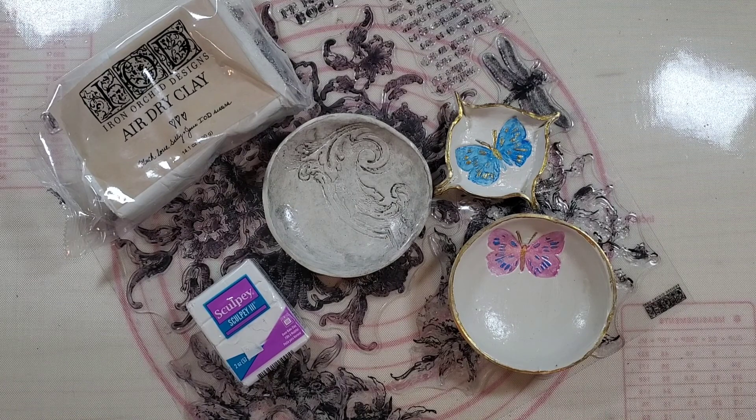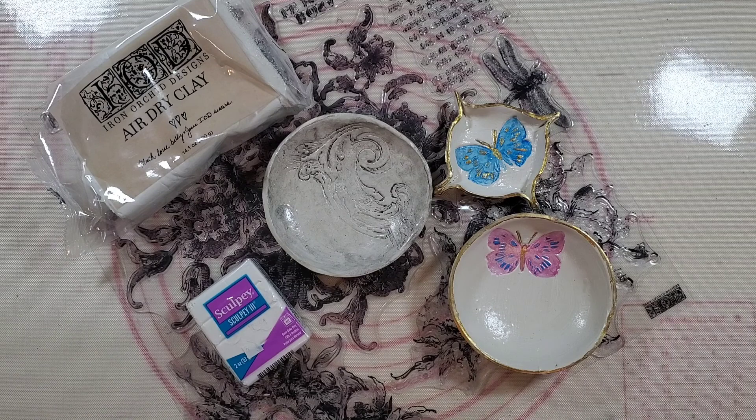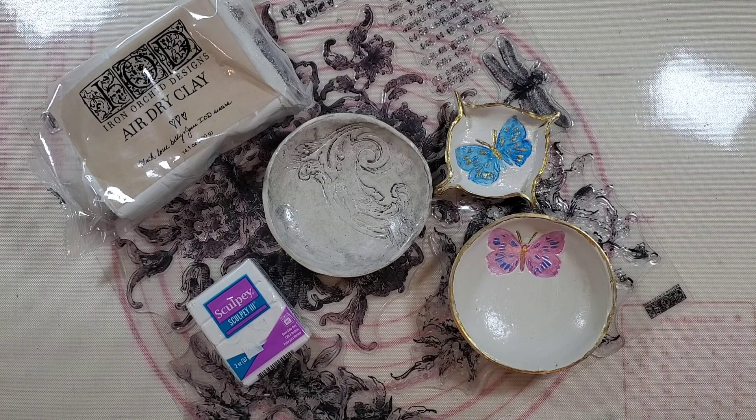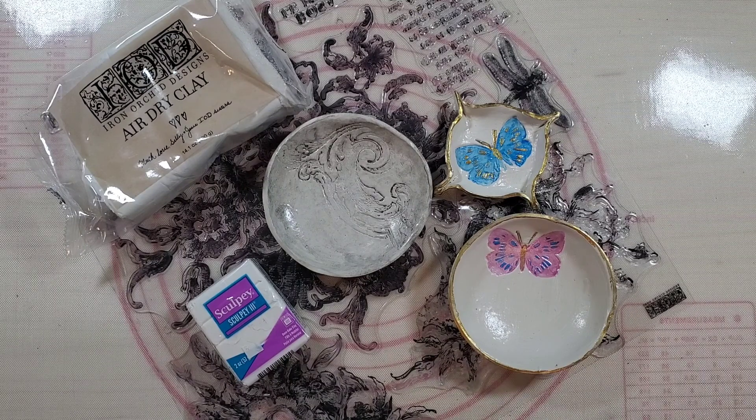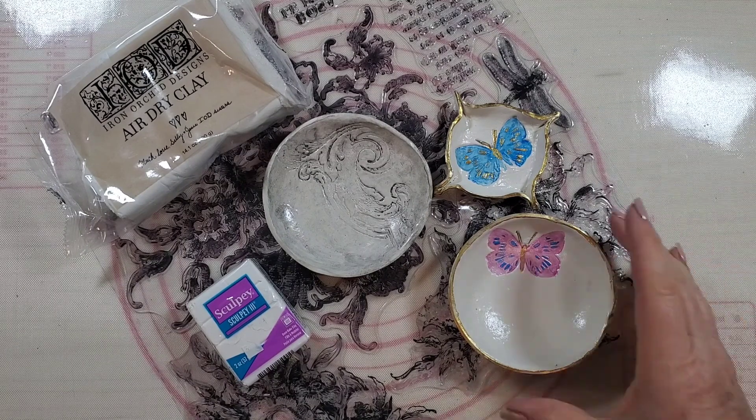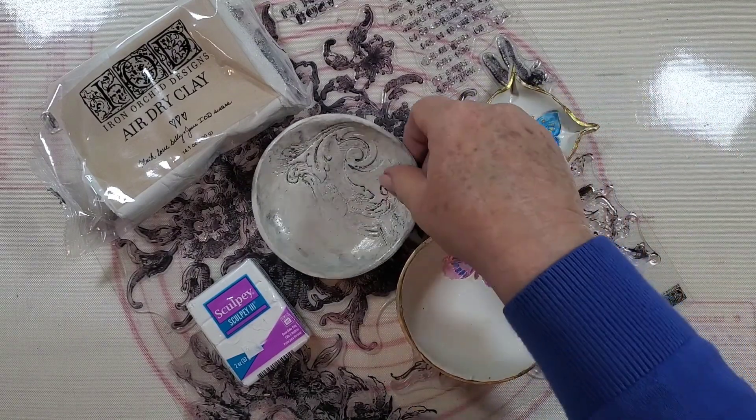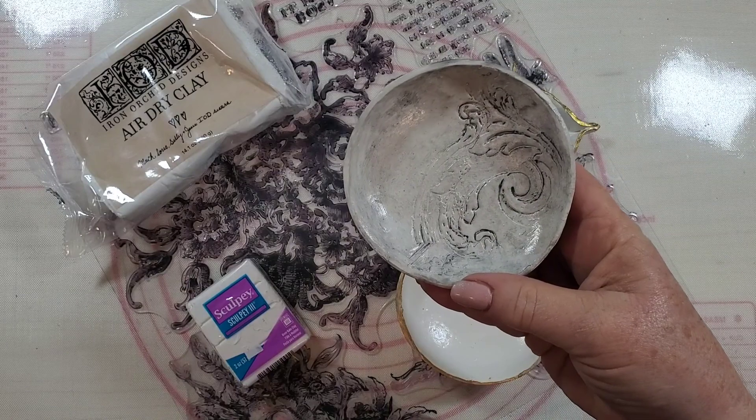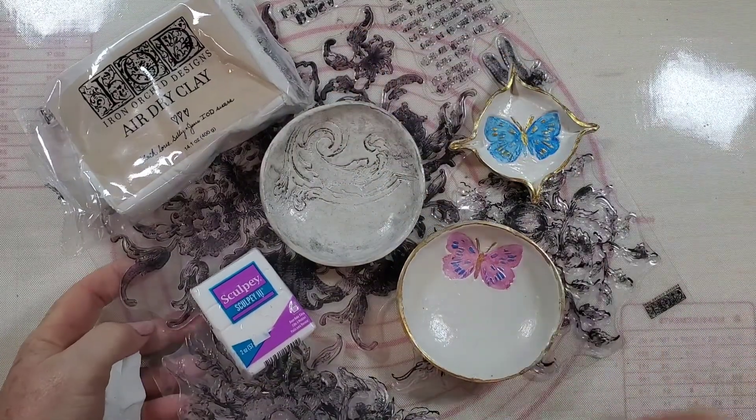Hi, this is Myra with Boutique Paint. Today we're making ring bowls and I'm going to be using both Sculpty and Iron Orchid Designs air dry clay just to show you that you can do it with both. These are a few samples, and I'm going to stamp them with Iron Orchid Design stamps, so let's get started.